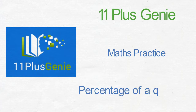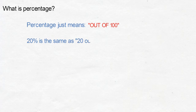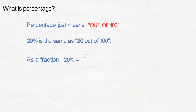What is percentage? Percentage just means out of a hundred. Twenty percent is the same as 20 out of a hundred. As a fraction, 20 percent equals 20 over a hundred.